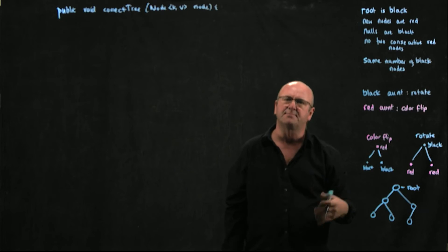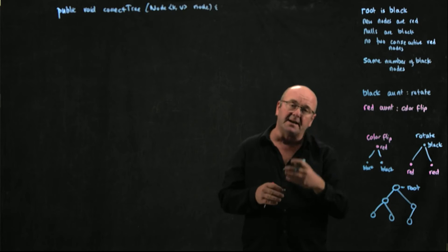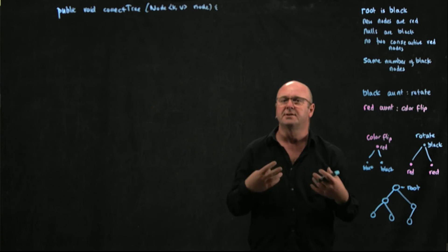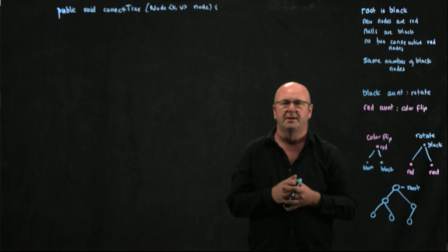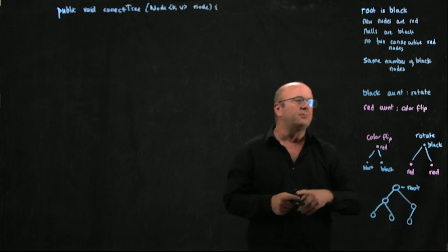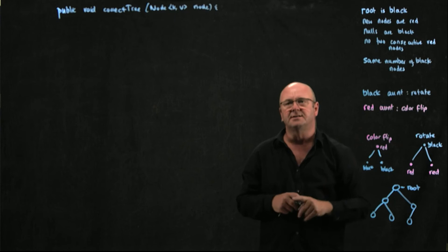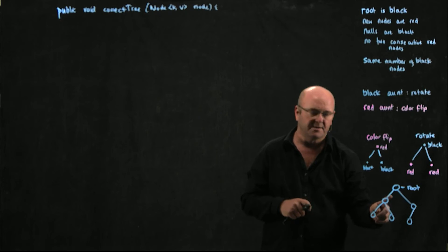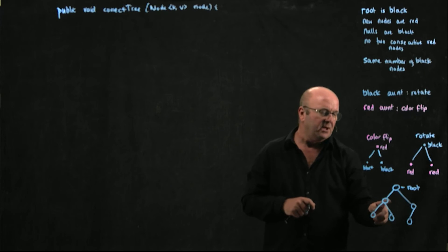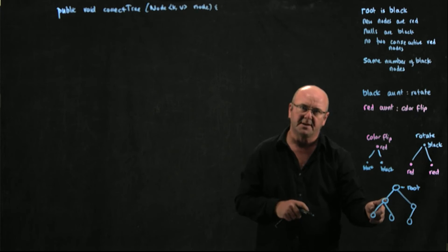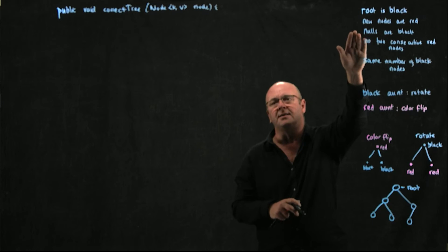The rotation is more complex because we need to figure out whether the violation is in the left child's left subtree, right child's right subtree, and so on — to determine if we do a left, right, left-right, or right-left rotation. To find the aunt, we look at whether the parent is a left child, in which case the aunt is the grandparent's right child, or if the parent is a right child, the aunt is the grandparent's left child. Remember: null nodes are black.